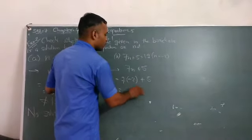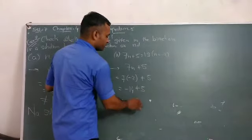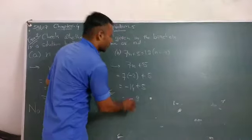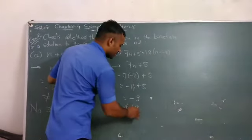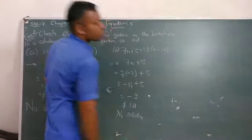7 times minus 2 is minus 14, plus 5. So you get minus 9. But we don't get 19. This is also no solution.